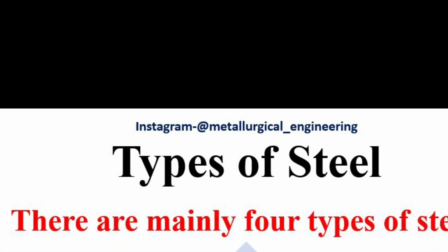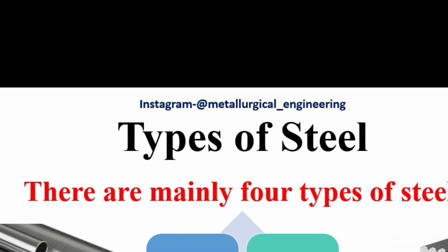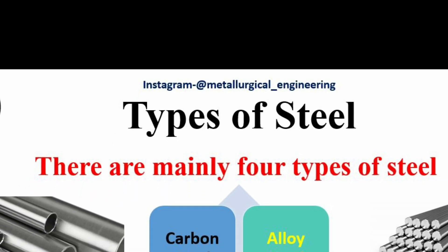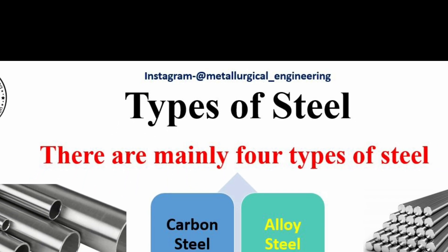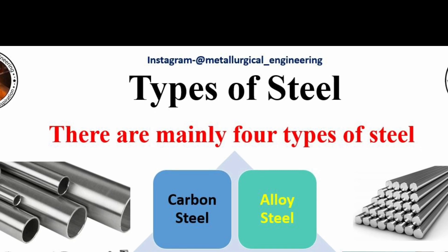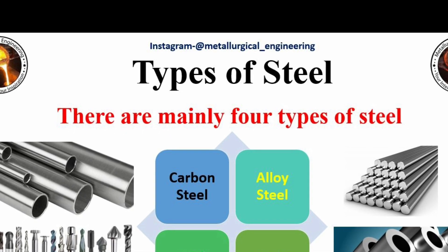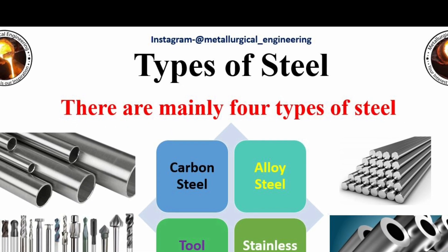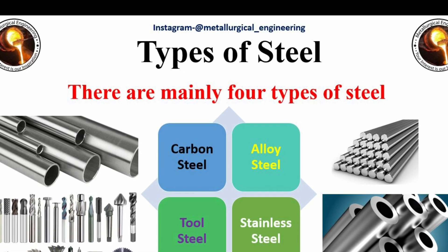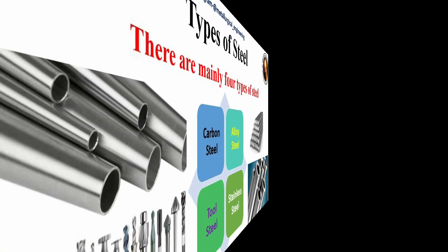There are more than 3,500 different grades of steel. But these steels are mainly categorized into four types: 1. Carbon steel, 2. Alloy steel, 3. Tool steel, and 4. Stainless steel.